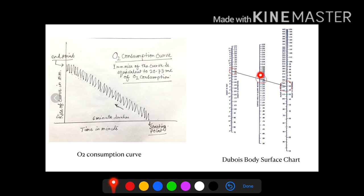Now what is the use of determination of basal metabolic rate? At present the use is very limited — only for preparation of a diet chart. But previously, when there was no method for determination of T3, T4, and TSH, this was used as a device for determining the thyroid status of the patient — whether the patient is hypothyroid, euthyroid, or hyperthyroid. But nowadays there is ample scope for determination of thyroid hormones, so this is not used nowadays for determination of thyroid status. So the use is limited to preparation of a diet chart only.